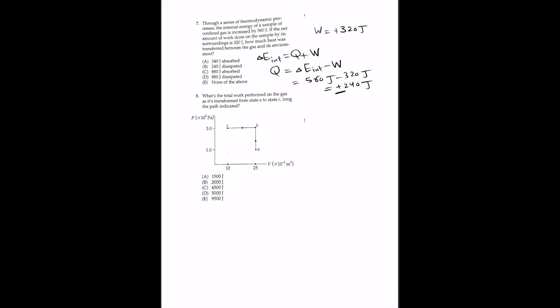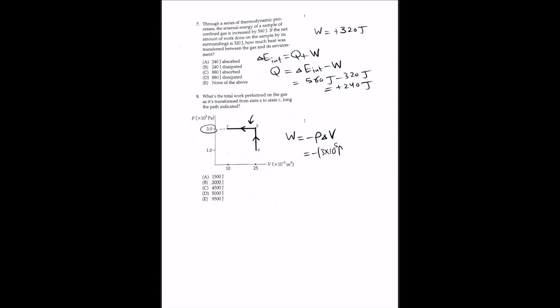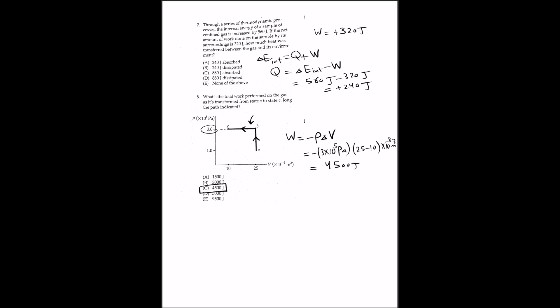For question 8, the total work performed on the gas as it transforms from state A to state C along the indicated path: from A to B, no work is done because volume is constant. So the total work from A to C equals the work from B to C. Since pressure is constant from B to C, the work equals pressure times change in volume: −3×10⁵ Pa times (25−10)×10⁻³ m³, giving 4,500 joules. Thank you for watching.